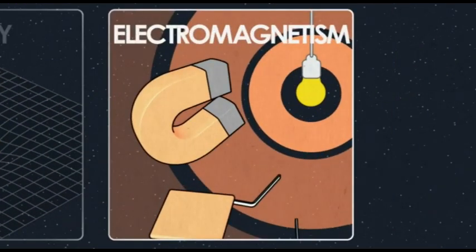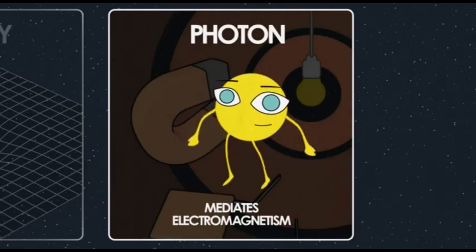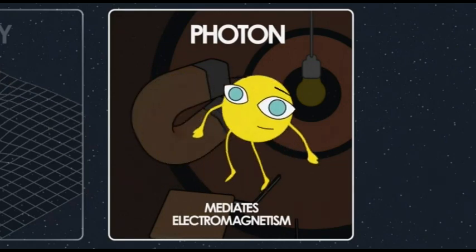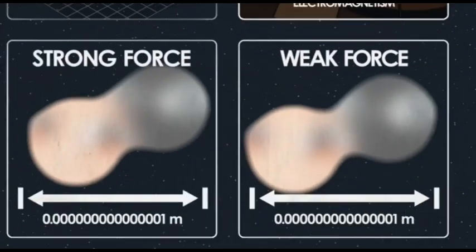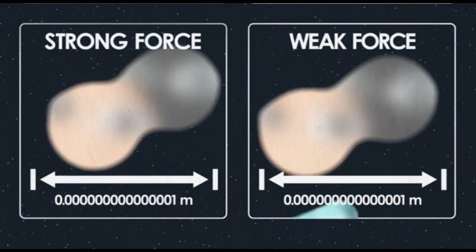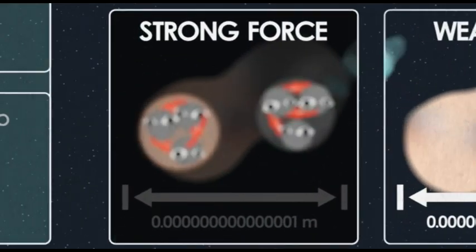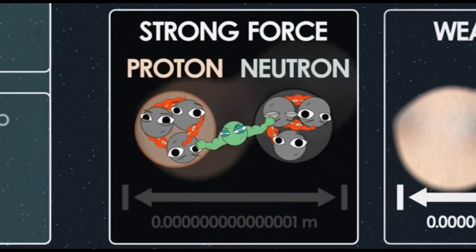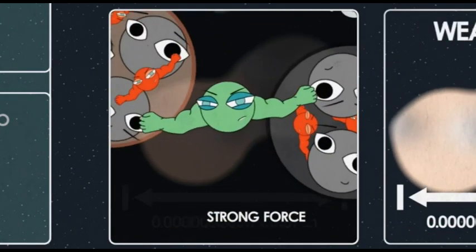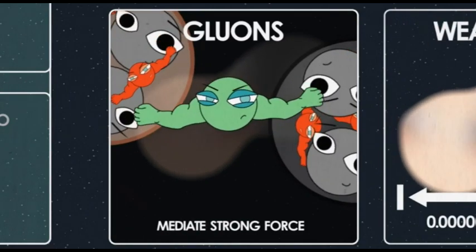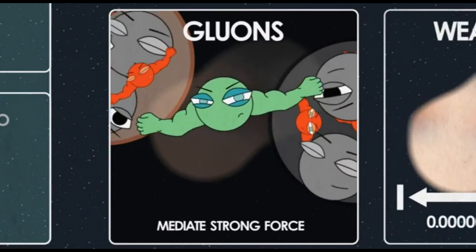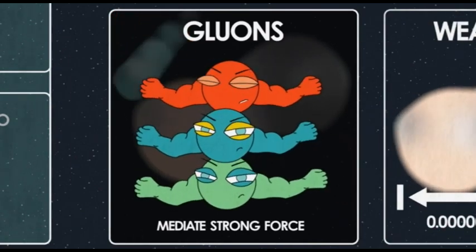There is one boson for electromagnetism — the photon, a packet of electromagnetic energy, and there are photons whizzing around the room right now. But the nuclear strong force and nuclear weak force don't have just one boson each. The strong force holds quarks together into protons and neutrons, and holds protons and neutrons into atomic nuclei. The carriers of the strong force are called gluons, because they're like glue.